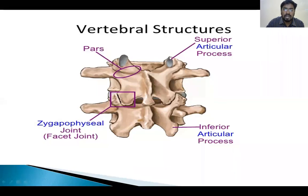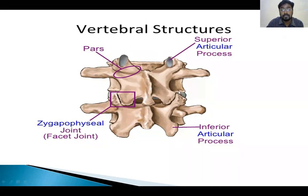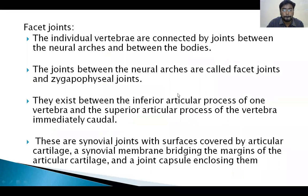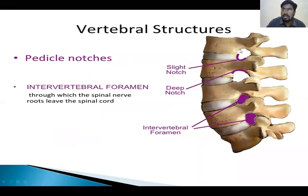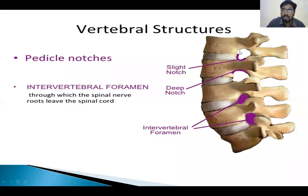These are the superior articular surface and inferior articular surface of the same vertebra. What are pedicle notches? We also call them the intervertebral foramina. This is the inferior notch of the vertebra. When adjacent vertebrae are aligned, we see a normal foramen — we call it the intervertebral foramen — through which the exiting nerve roots of that segment come out.